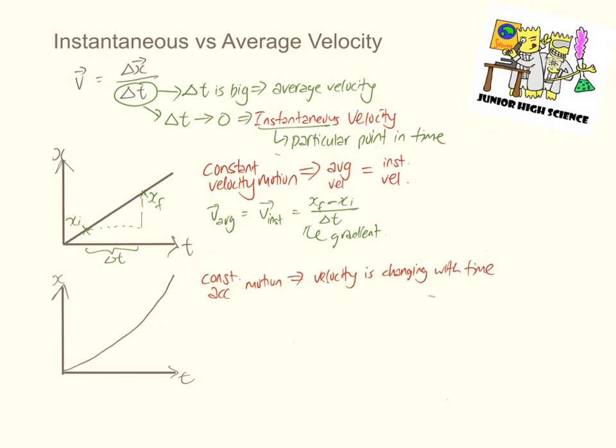To calculate the average velocity of the object, we use the same method as before. We identify the initial position, xi, and the final position, xf.